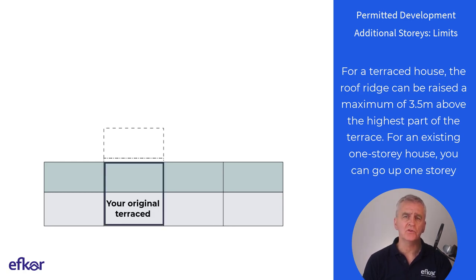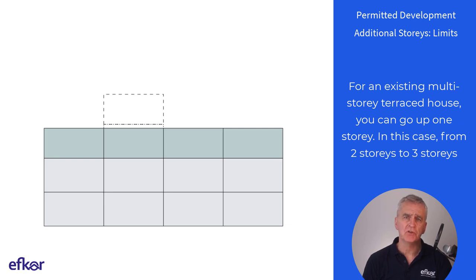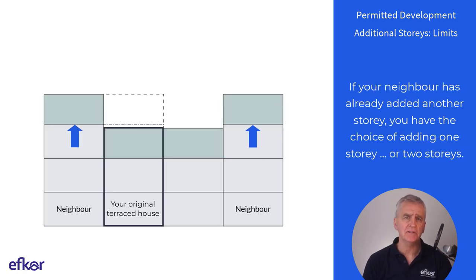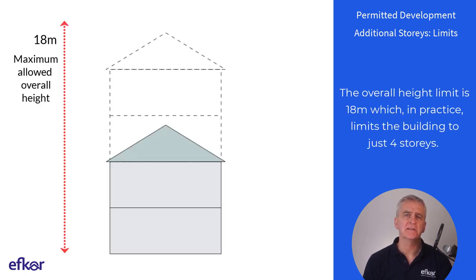For an existing one-story terraced house, you can go up one story. If your neighbor has added another story, you have a choice of adding one story or two stories. The overall height limit is 18 meters, which in practice limits the building to just four stories.